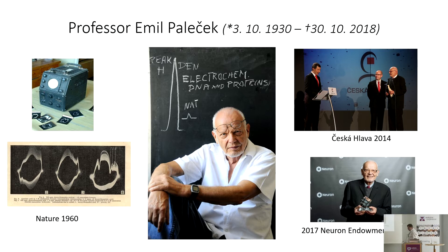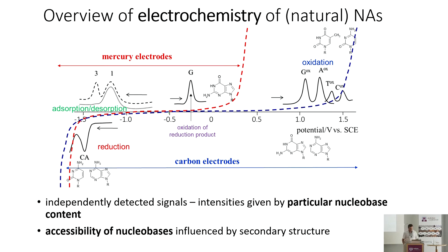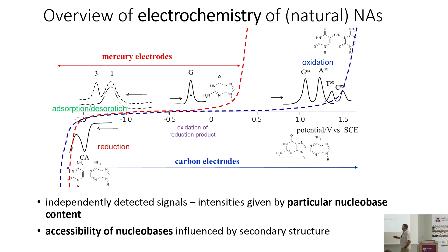Emil Palecek was the first scientist who observed that when he applied oscillographic polarography to study DNA, he observed something linked to reduction of something in DNA. Later it became clear that this something is nucleic acid bases — particularly this peak, which is common in random DNA, common for cytosine and adenine reduction at mercury and, today, also carbon electrodes because we learned how to apply carbon electrodes at such negative potentials. In the negative potential region you can also observe something related to adsorption and disruption processes.